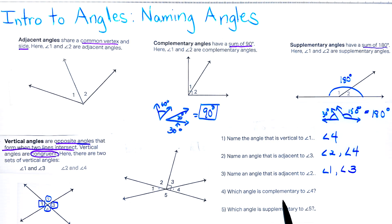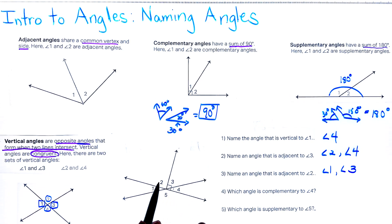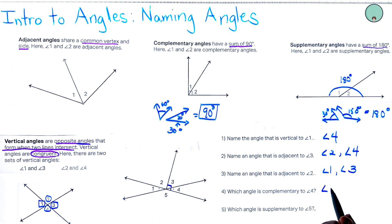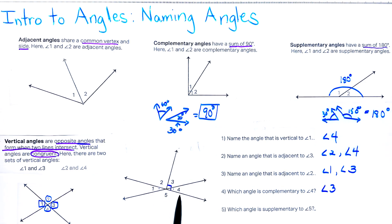Which angle is complementary to angle four? Complementary means it has to add up to 90 degrees. This box right here tells me that angle four and angle three add up to 90 degrees, so the answer to that one is angle three.